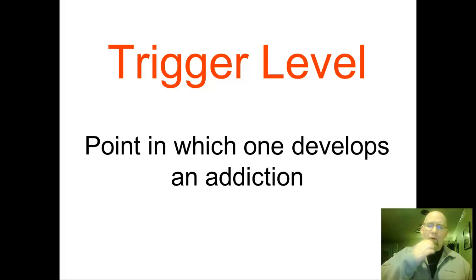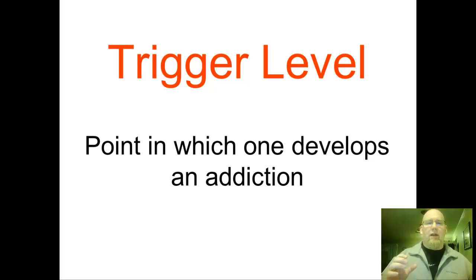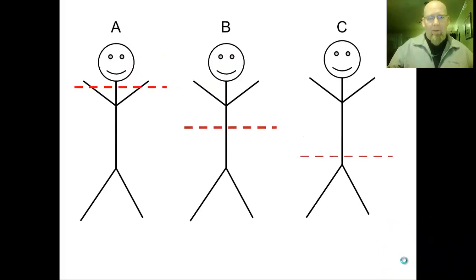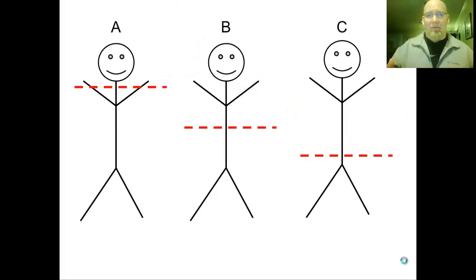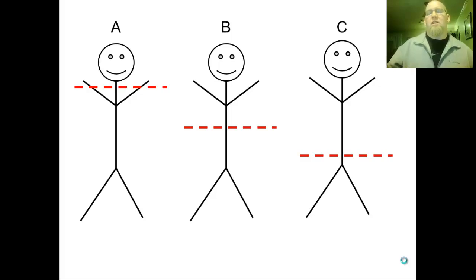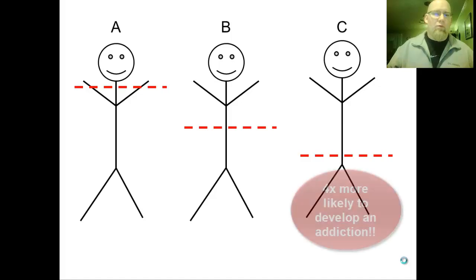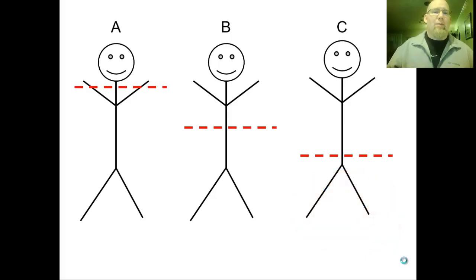Let's put up some graphs that show how trigger level, tolerance level, and impairment all work together. Take three people: Person A, Person B, and Person C. The red line represents the trigger level, which can't be changed — that's what we're born with, our genetic setup in terms of when we develop an addiction. Person A's trigger level is very high; Person C's trigger level is very low. Person C may have a parent or grandparent who dealt with addiction — research tells us that if you have a parent or grandparent with an addiction, you're four times more likely to develop one.